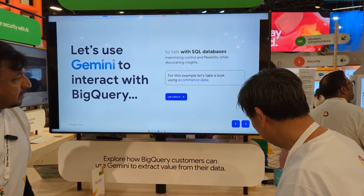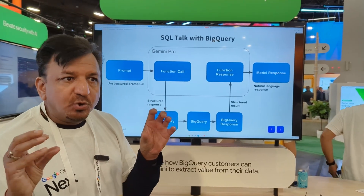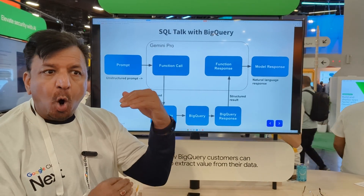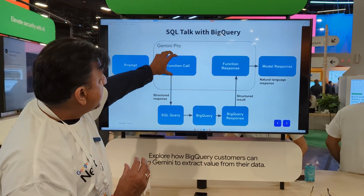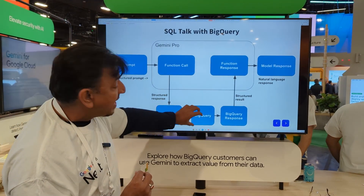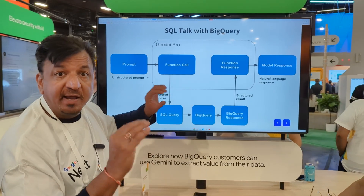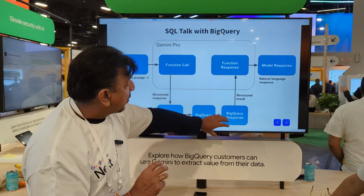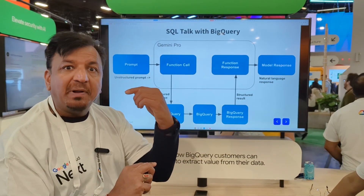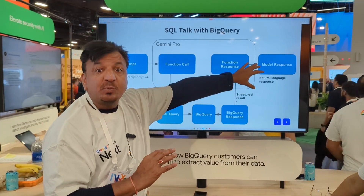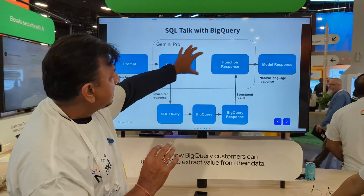To summarize: a non-technical user interfaces with Gemini, and Gemini does all the coding on the back end. The user simply provides a prompt, which calls the right functions, running the SQL query against the backend system. In this case, it pulls data from BigQuery — Google's analytics platform — which returns a response that is then translated back into human-readable natural language for the user.